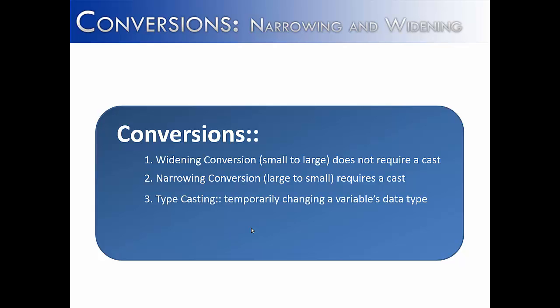The definition of typecasting is temporarily changing a variable's data type. So we said when we're making a narrowing conversion that we're taking one data type and moving it into a smaller one. We have to put the smaller data type in parentheses in order to make that conversion. And it's only temporary. The value would still be whatever original data type it would be.